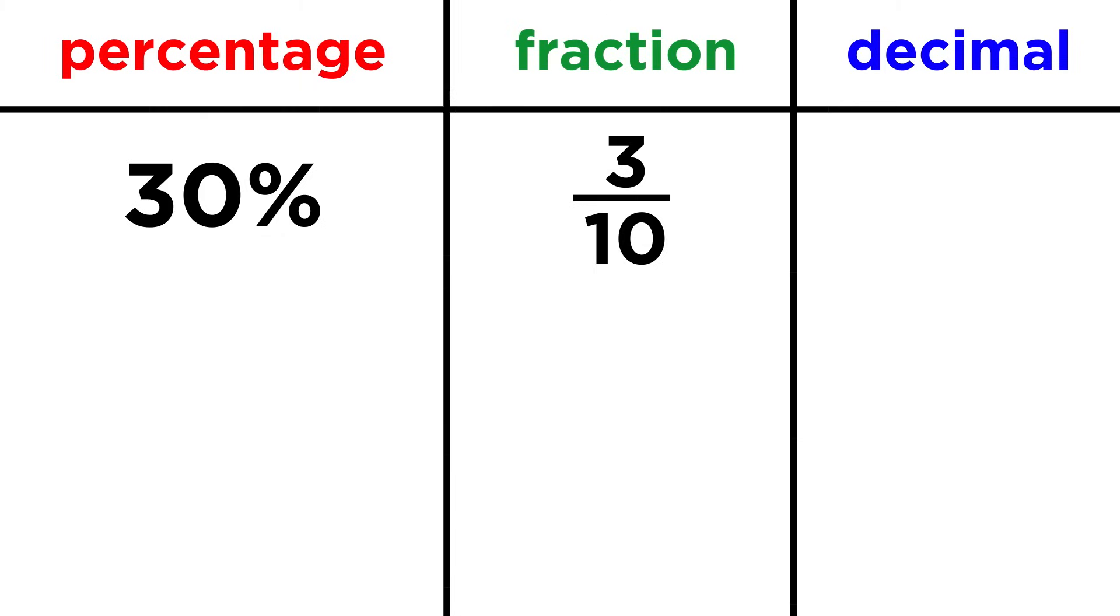Now let's get that as a decimal. Well we know where the tenths place is, so if we have three tenths, we just need to place a three in the tenths place, so zero point three. And there we have three different ways of expressing the same value.